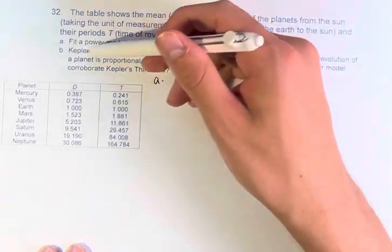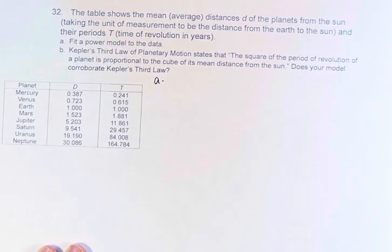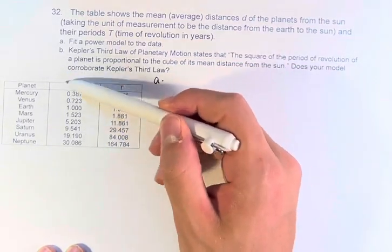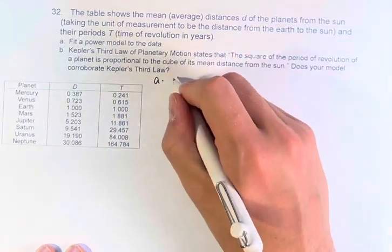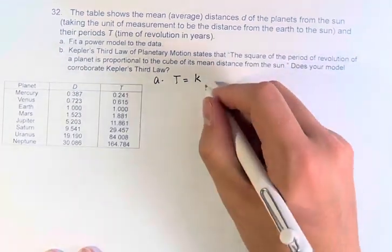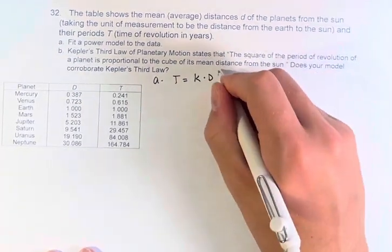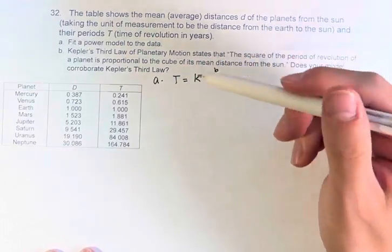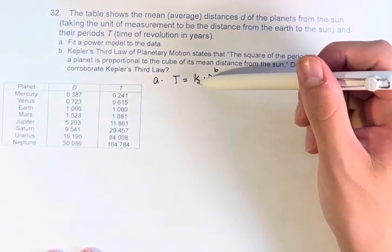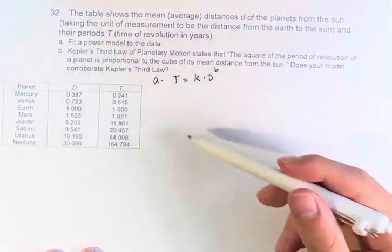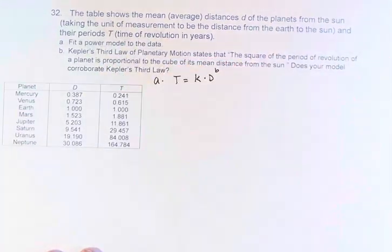So in Part A, we're asked to fit a power model to this data. So if we're saying this is a function of d to model t, then it would look like t is equal to some constant k times d to the b for some exponent b. And what we're going to do is turn this into a linear function, find the linear regression of that, and then turn it back into a power function to get a model for the data.